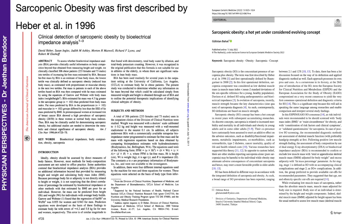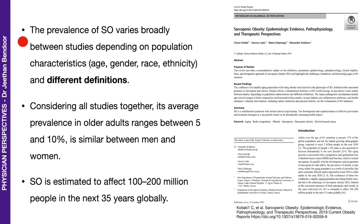Sarcopenic obesity is not really new — it was first described in 1996, yet even in 2022 a paper called it 'a hot yet under-considered evolving concept.' The prevalence varies broadly between studies depending on population characteristics such as age, gender, race, and ethnicity, and different definitions. Overall, its average prevalence in older adults ranges between five and ten percent, similar between men and women. I seriously think this is an under-reported condition.